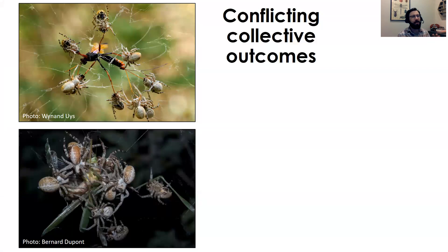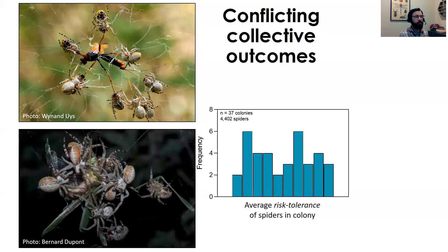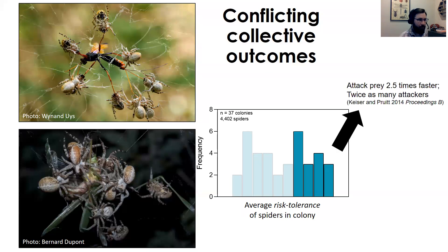In studying collective foraging in these spider societies, a fast response is really important — whether defending against dangerous intruders or overwhelming large prey. Here is a frequency distribution of 37 colonies from the field containing individuals that vary in their risk tolerance, an individual-level behavioral phenotype we call boldness. Colonies containing on average more bold or risk-tolerant individuals attack prey more quickly. Colonies at the bold end of the distribution attack prey two and a half times faster and with twice as many participants compared to colonies at the other end.